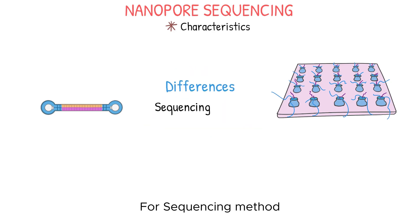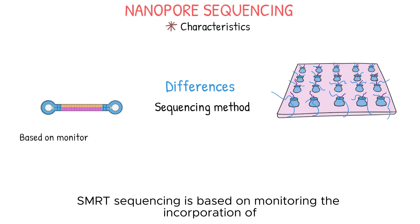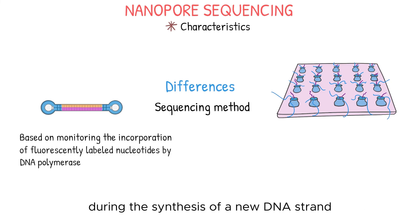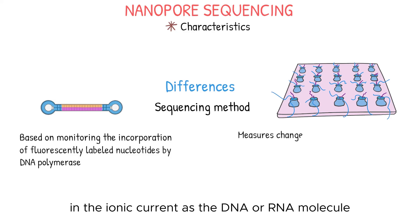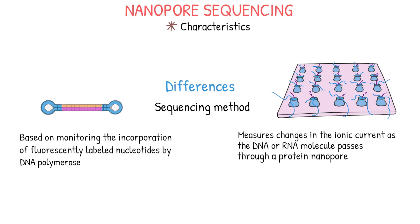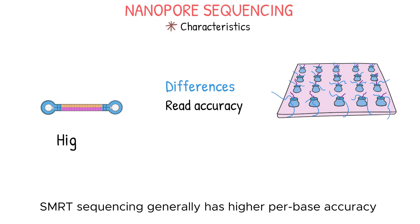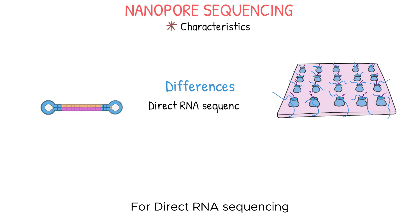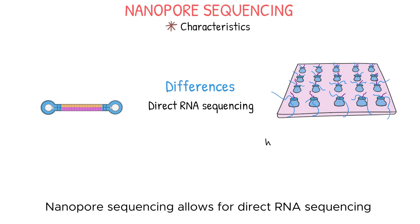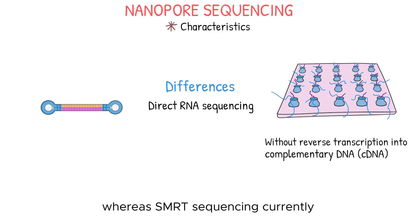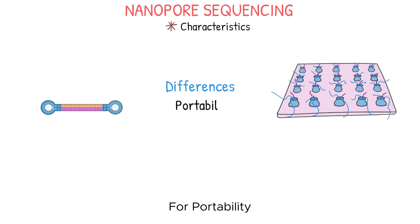The differences are: for sequencing method, SMRT sequencing is based on monitoring the incorporation of fluorescently labeled nucleotides by DNA polymerase during the synthesis of a new DNA strand. Nanopore sequencing measures changes in the ionic current as the DNA or RNA molecule passes through a protein nanopore, inferring the nucleotide sequence based on these current changes. For read accuracy, SMRT sequencing generally has higher per-base accuracy compared to nanopore sequencing. For direct RNA sequencing, nanopore sequencing allows for direct RNA sequencing without reverse transcription into cDNA, whereas SMRT sequencing currently does not have this capability.